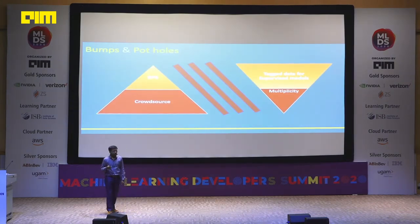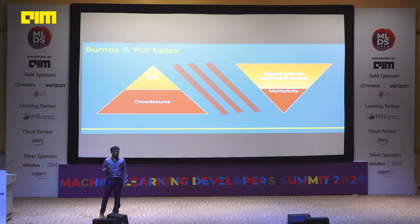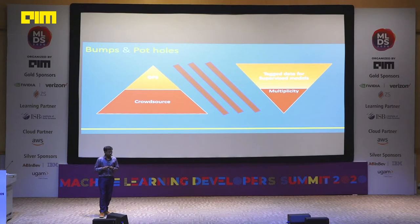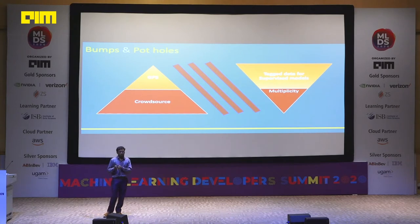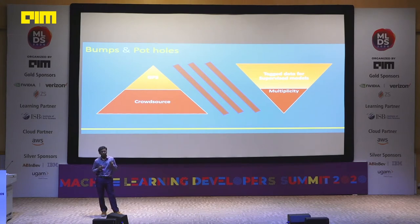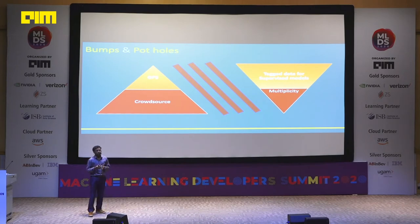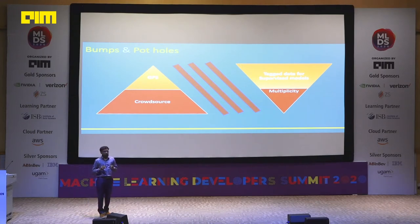The issues we faced: the GPS gave some incorrect points — pointing to buildings or trees on the road — so we used the Google Maps API and its snap-to-roads feature to correct those points onto the road. However, we lost some data in doing that because the exact point of a pothole was sometimes lost. But over a period of time, with more data coming in, we were able to accurately mark those points.